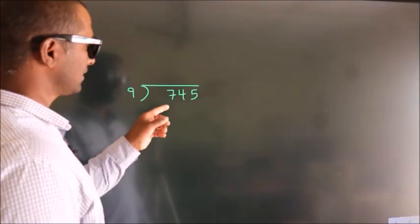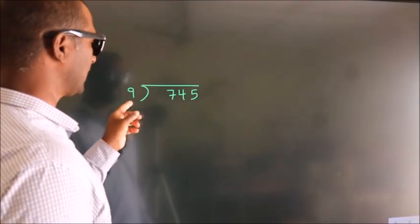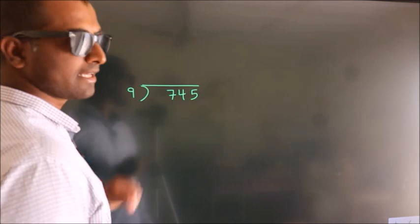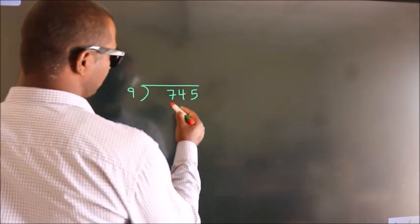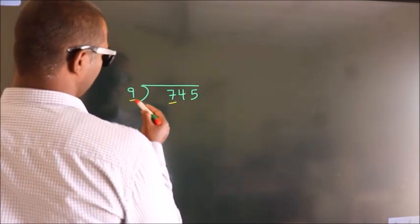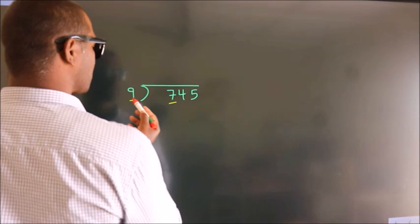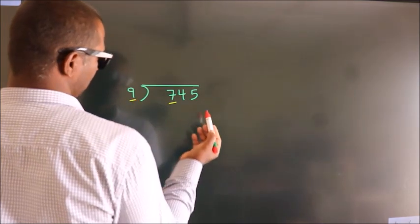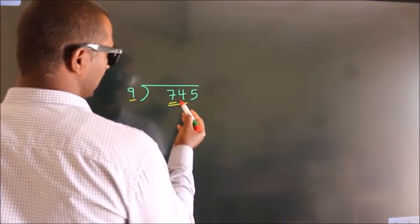How to divide 745 by 9. See, here we have 7, here 9. 7 is smaller than 9, so we should take 2 numbers: 74.